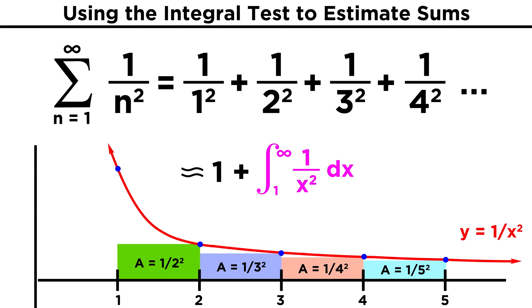We know how to evaluate the integral. We just find the antiderivative, which is negative one over x, and we evaluate at infinity, and then at one, which gives us zero minus negative one, or positive one. The one from before, plus the one from the integral, equals two, so that's our estimate for this sum.